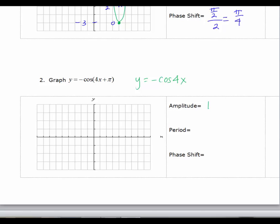So the amplitude of the original function is 1. The period is 2 pi over b and b is 4, so we've got pi over 2 is our period.